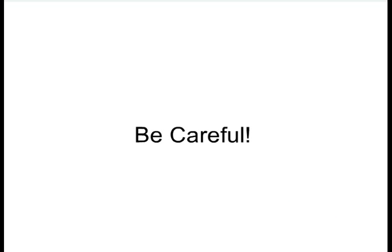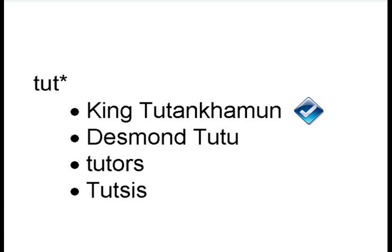Although you've seen that truncation can help you search more efficiently, be careful in its use. Sometimes the overuse of truncation can make your search imprecise. For example, if I type tut asterisk in the hopes of finding items relating to King Tutankhamen, I will also find unrelated items about Desmond Tutu, tutors, and Tutsis.